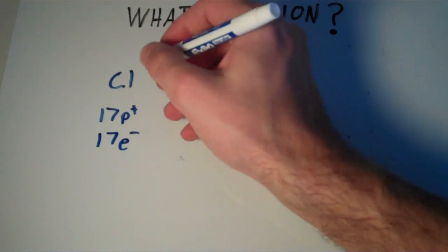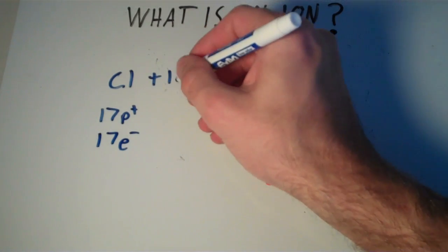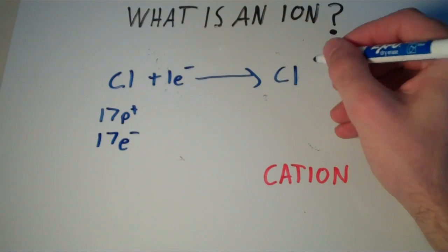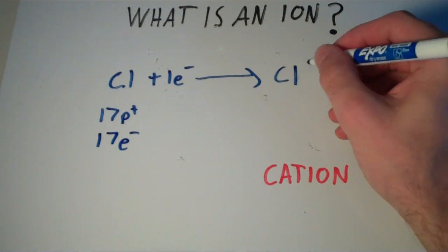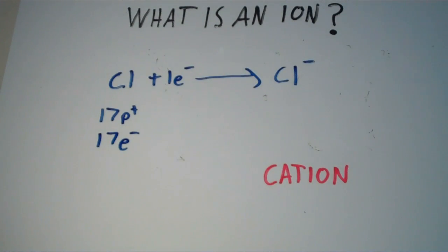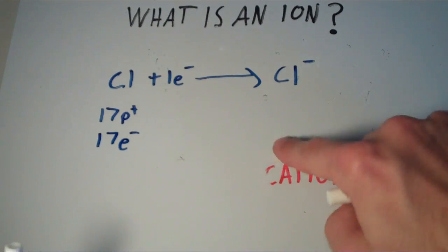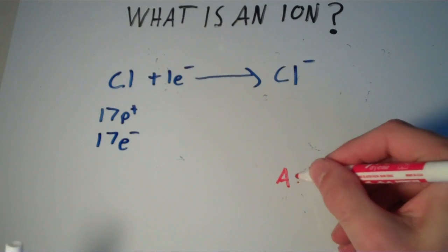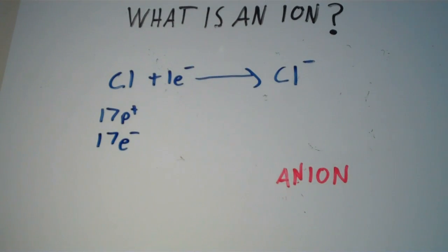However, a chlorine atom can gain an electron to form a chlorine ion, or a chloride ion. And negatively charged ions are called anions. So cations are positive, anions are negative.